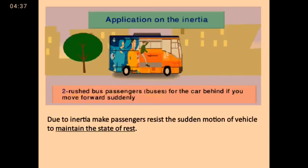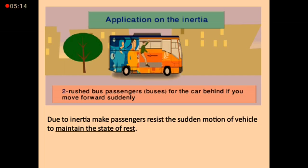Another example for inertia in the opposite direction — look at this picture. What happens? The passenger is in the bus when the bus suddenly moves. The bus was firstly in the rest state. But when the bus suddenly moves, you will notice that passengers move backwards. A force of inertia appears in the form of rushing passengers backwards.